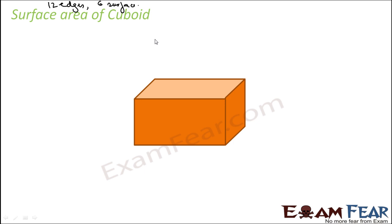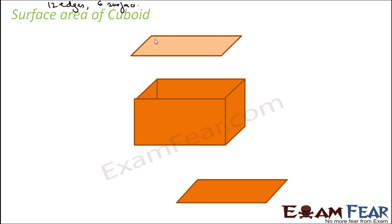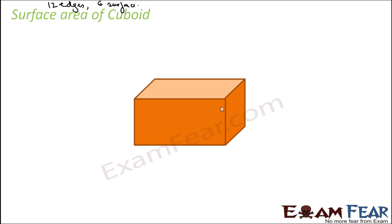To find this, let's break this cuboid — move the first surface up, move the second surface down. Let's give conventions first. This side is length, I will call it L. This is breadth, I will call it B. And this is height, I will call it H. Let these be the dimensions of the cuboid: L, B, H.